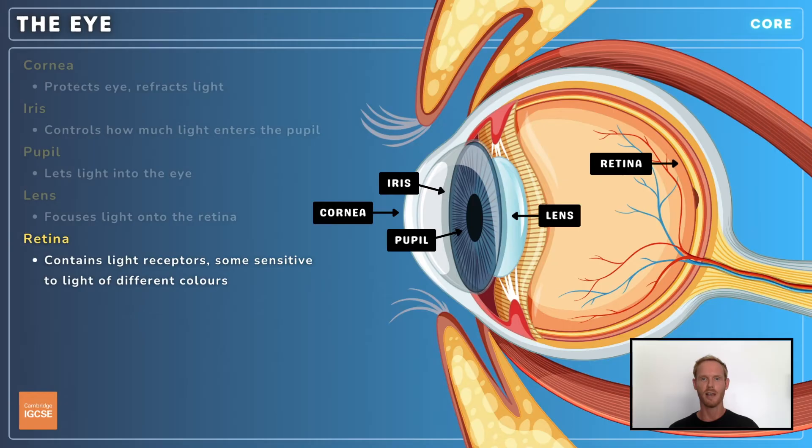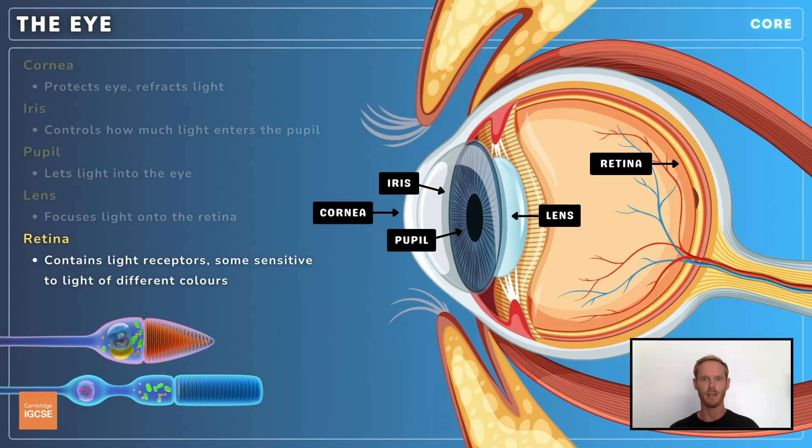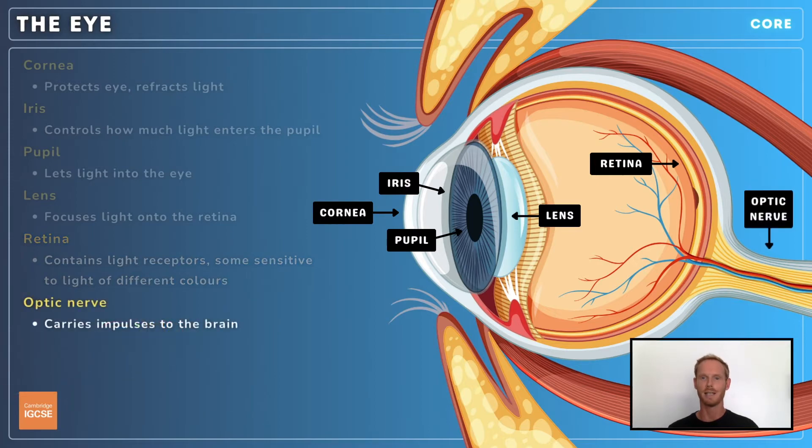The lining on the inside surface at the back of the eye is called the retina. The retina contains millions of light-sensitive receptor cells, some of which are sensitive to light of different colours, while others form images in shades of grey. When light hits these cells, they send electrical impulses through the optic nerve to the brain, resulting in the sensation of sight.